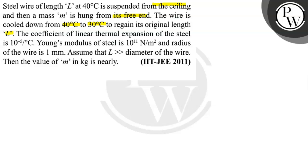Young's modulus of steel is 10^11 N/m² and the radius of the wire is 1 mm. Assume that L is much greater than diameter of the wire. Then the value of m in kg is nearly.